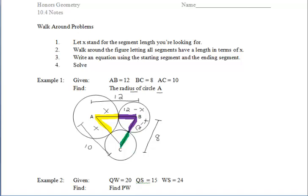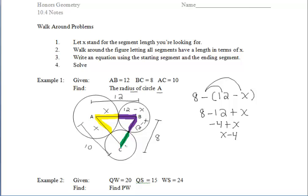To represent the green segment, we have to take the length of segment BC, which is 8, and subtract off the purple segment, which is 12 minus X. Don't forget to put parentheses around that. So we're doing 8 minus the quantity of 12 minus X. Distributing the negative, we're left with 8 minus 12 plus X, which is negative 4 plus X, or X minus 4. So the green segment has a length of X minus 4, which means the other radius in that circle — the other green segment — also has a length of X minus 4.